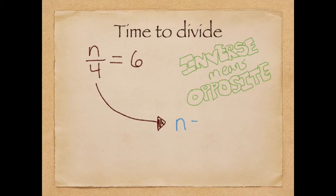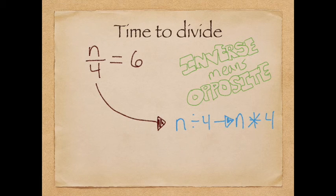Well, the opposite of division is multiplication. So we can read this as n divided by four, or we can read this, and the opposite, of course, is n times four.